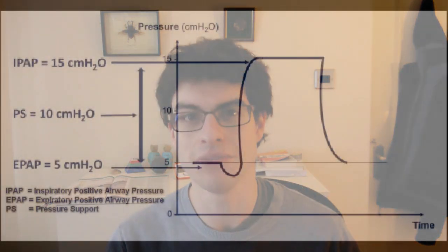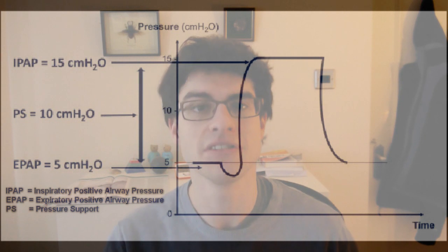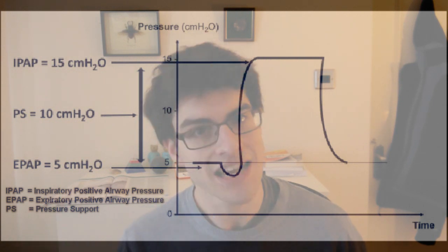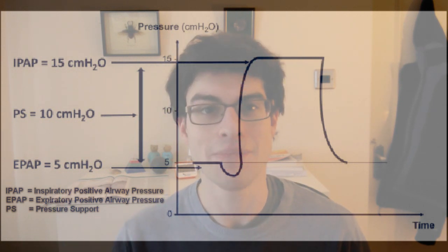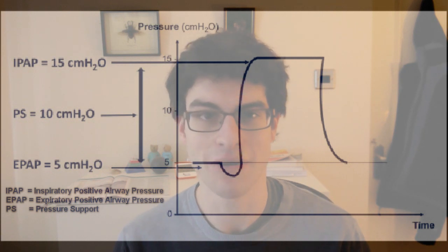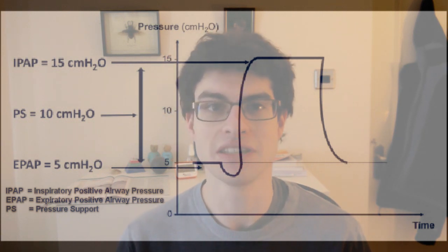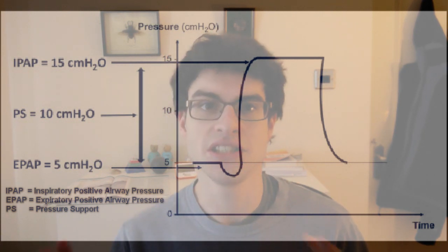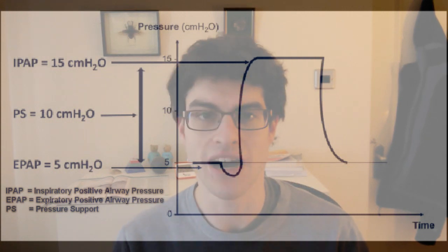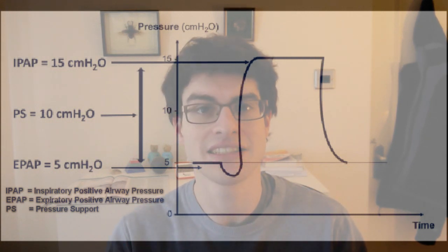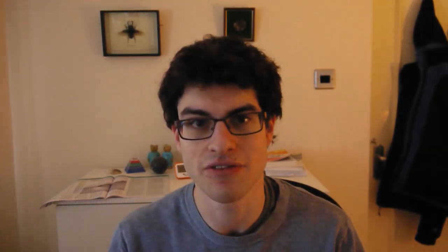There are two numbers for NIV. The first number refers to the IPAP — Inspiratory Positive Airway Pressure. The second number refers to the EPAP — Expiratory Positive Airway Pressure — which is equivalent to PEEP. You usually start patients on about 15 by 5, and eventually want to increase it as tolerated to about 20 by 5.